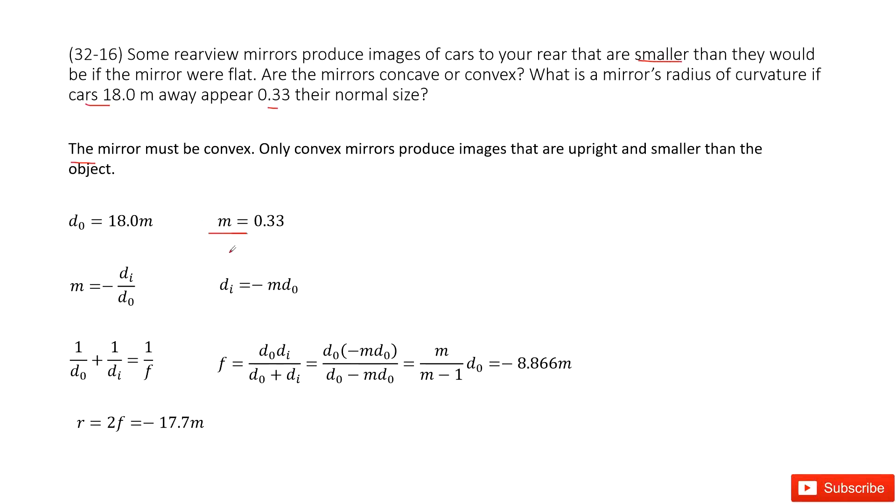Now after we know these two values, we need to find the radius for the mirror. We can see normally we consider the radius from the focal length. So we have one equation to connect the object distance, image distance, and focal length in this equation.